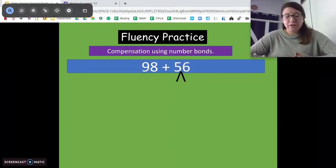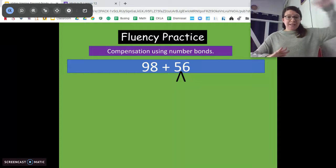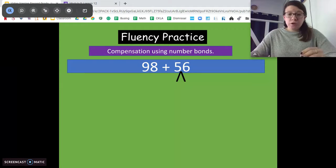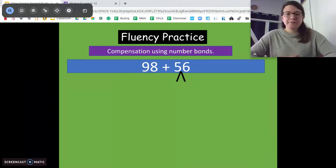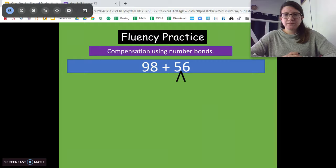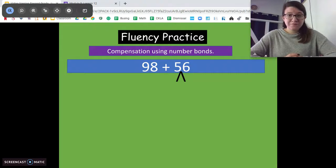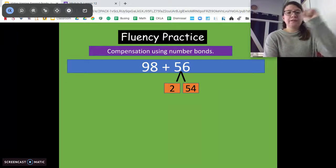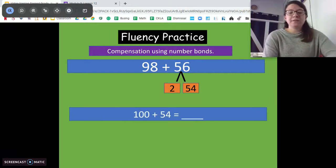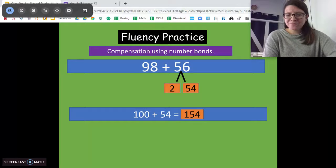Alright, this one's a little bit different. You're still getting 98 to its next hundred. So think about how many you need to do that and take that out of the 56. Pause and solve. Good. You need 2, right? So we're gonna take the 2 out and we get 54. So we have 98 plus 2 is 100, plus 54. 154. Good job!